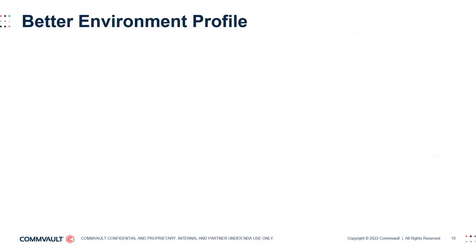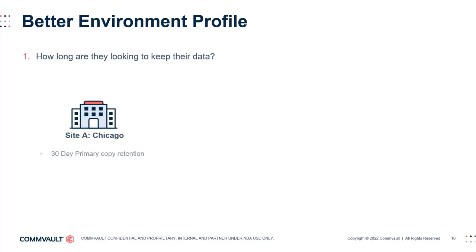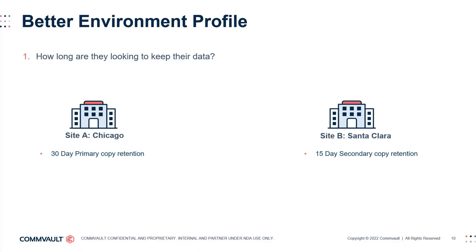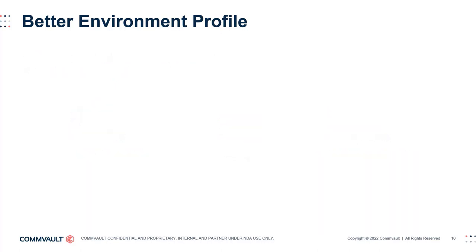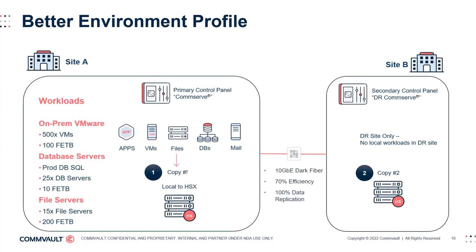To build on this profile, consider asking probing questions to help flesh out an actual basic design — like, how long are they looking to keep their data? Depending on retention requirements, this can change where data is stored or what storage to use for particular data types. In this instance, Chicago wants to keep their data on hand for 30 days on site, and the customer also has a separate site where data can be retained for 15 days. What kind of data growth is expected? With the amount of data growth in an environment, this can guide your design to include storage options that Commvault may offer, like Hyperscale or Metallic Recovery Reserve. Recovery point objectives, recovery time objectives, and recovery level objectives can also change the whole scope of a design.